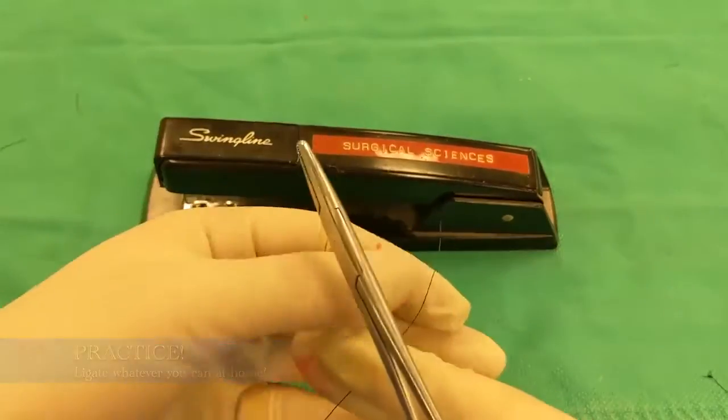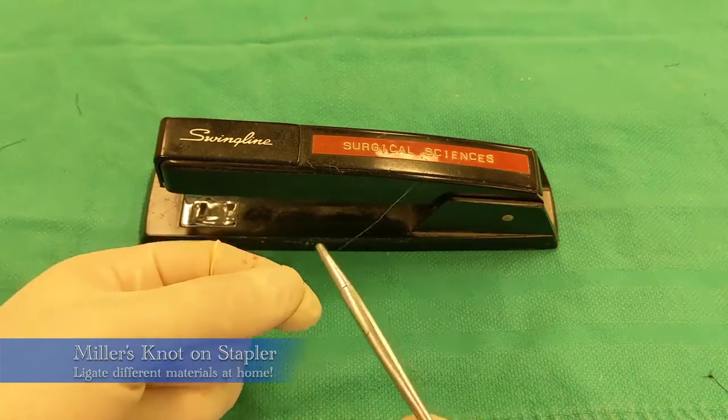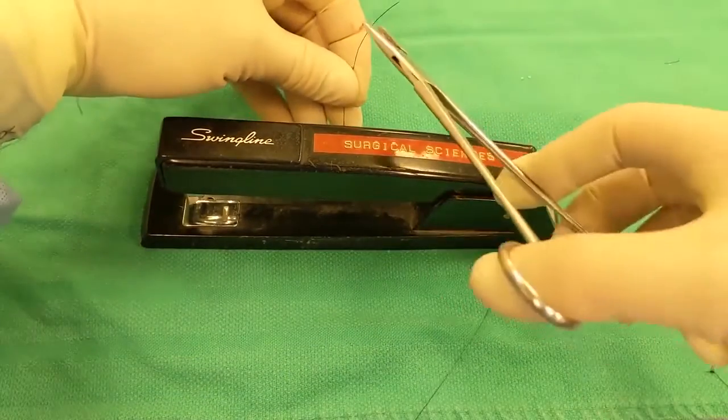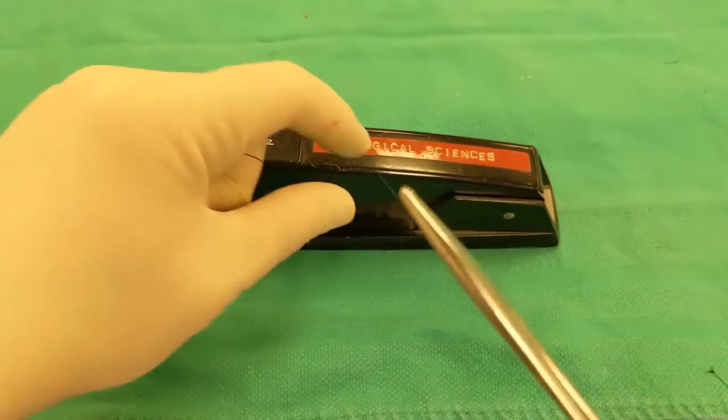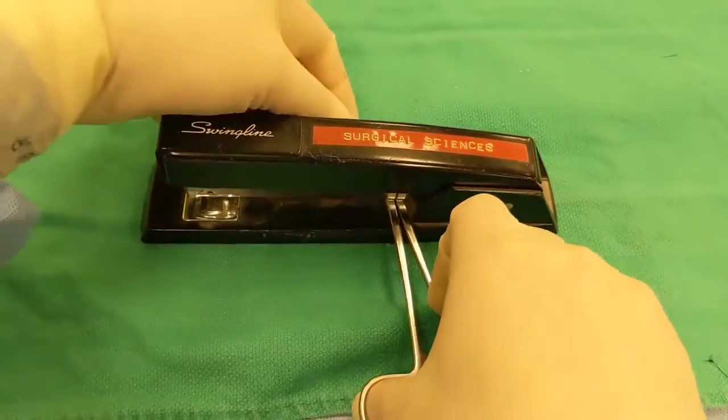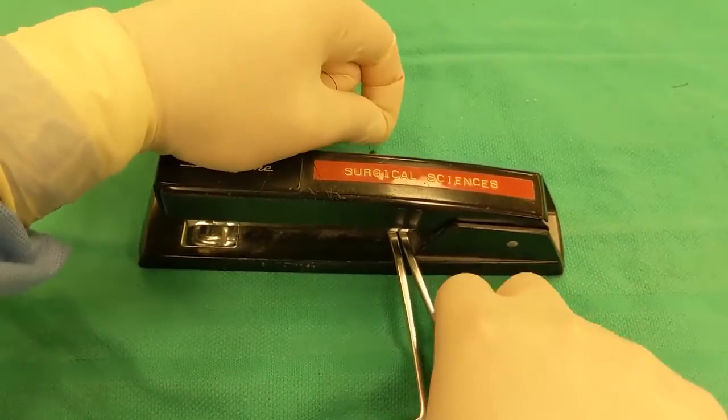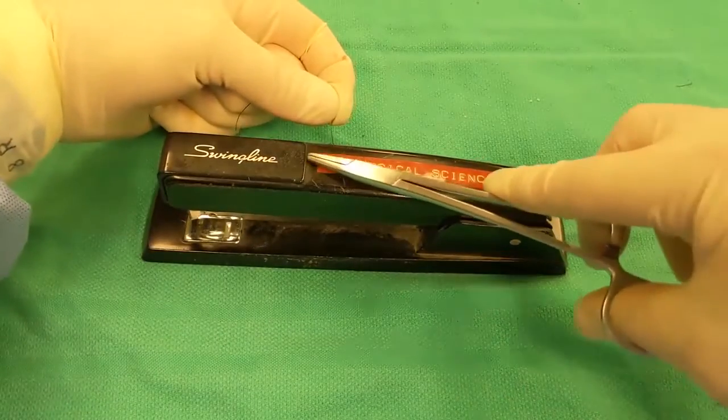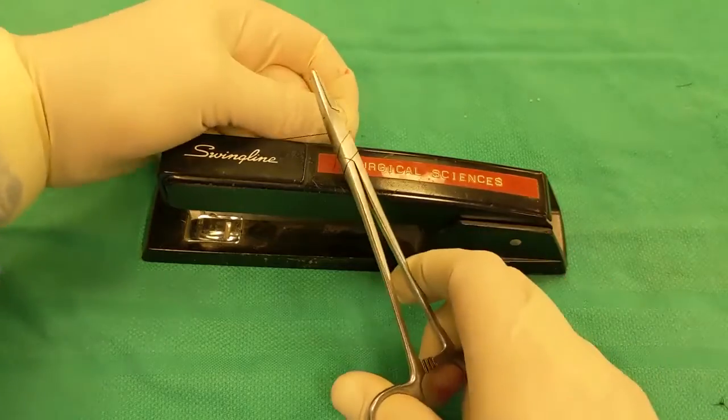It's time to practice at home. You can literally ligate anything. Here we are doing a miller's on a stapler, and ligating items, and ligating objects with different size, thickness, hardness, weight, can all be really helpful in helping you to familiarize yourself with the knot, and be able to perform them in multiple different clinical scenarios, and from multiple different angles.